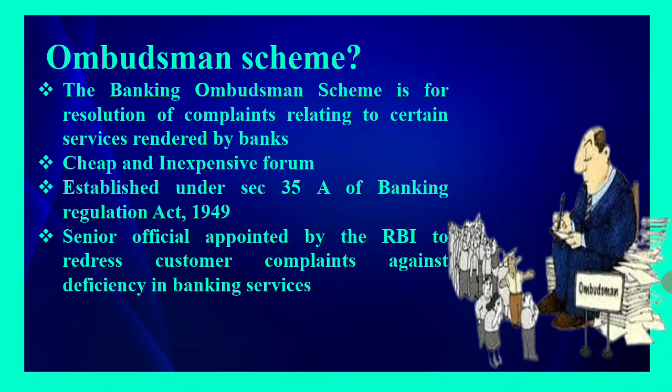Ombudsman is a person, not an entity. Who will appoint the Ombudsman? The Reserve Bank may appoint one or more of its senior officers in the rank of Chief General Manager or General Manager to be known as Banking Ombudsman — to redress bank customer complaints against deficiency in banking services. It is functionally appointed by the RBI to address and redress customer complaints against grievances or deficiency in banking services.